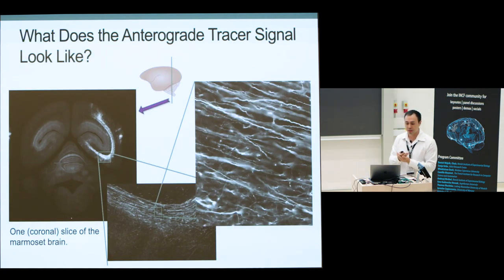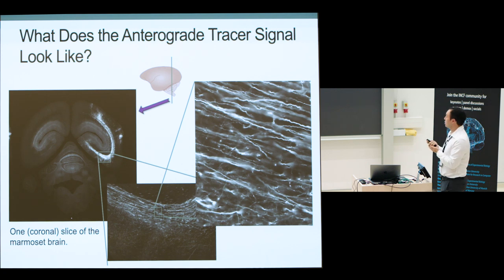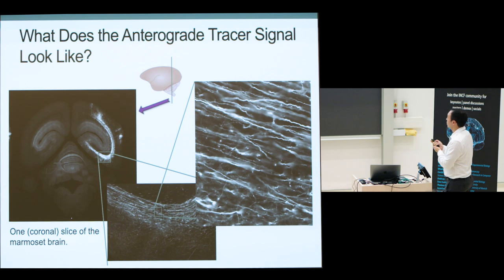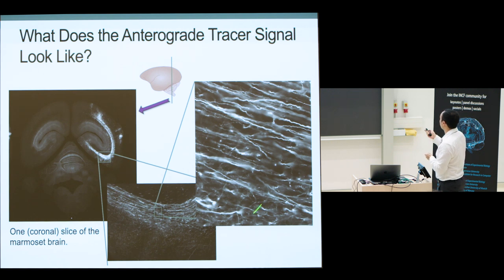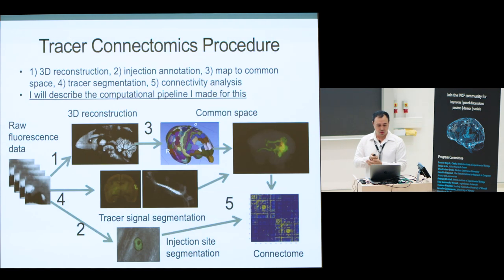What does the tracer signal look like? Here's an example generated from a NanoZoomer batch slide scanner. This bright signal is the tracer signal; this is the white matter — a coronal section of the marmoset brain. If you zoom in you can see the axons, and the blurry regions are out of the focal plane.